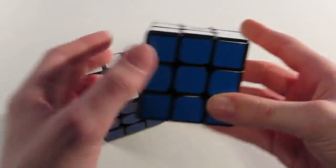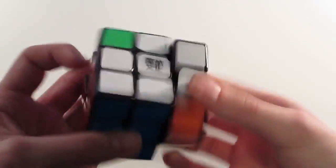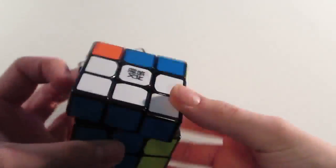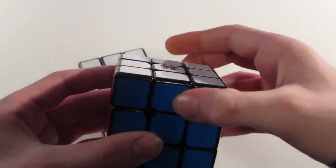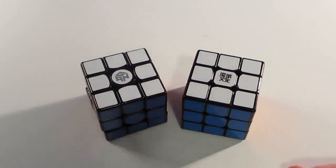This cube does have okay corner cutting. It's not the best. It's not better than the Gans. But I'd definitely say this cube flows better than the Gans 356. So the Gans has better outright corner cutting, but the Tang Long is overall more fluid.